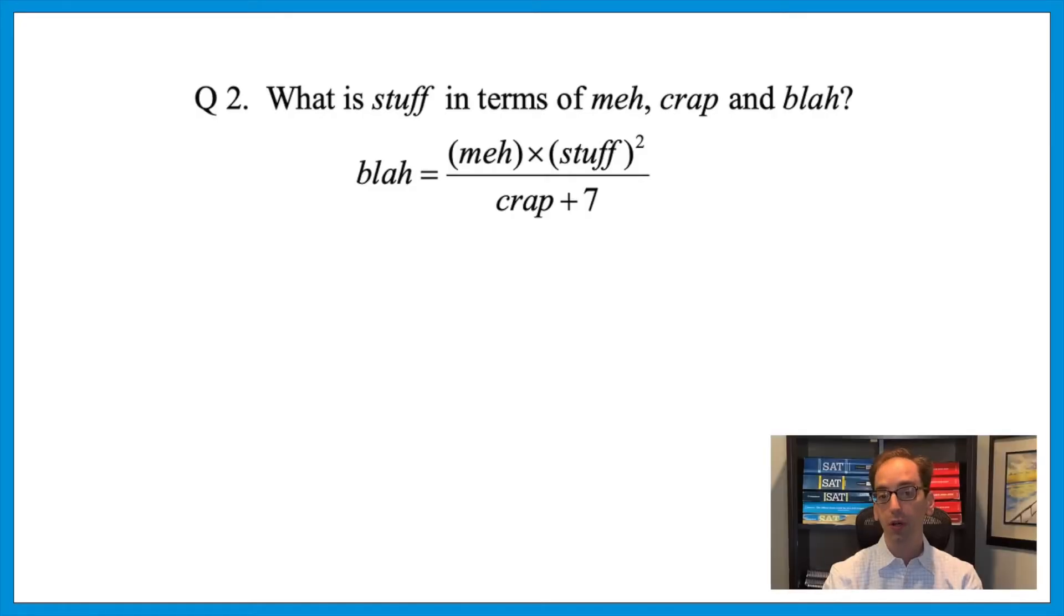So when the test uses the language in terms of, in terms of means to get that variable alone. Let's see how this can now come up on a more difficult question. Question two. What is stuff in terms of meh, crap, and blah? Silly words are fine. The concept will be the same. So when they say, what is stuff in terms of ba-ba-ba-ba-ba, it's the same as the last one. They want to get stuff all by itself.